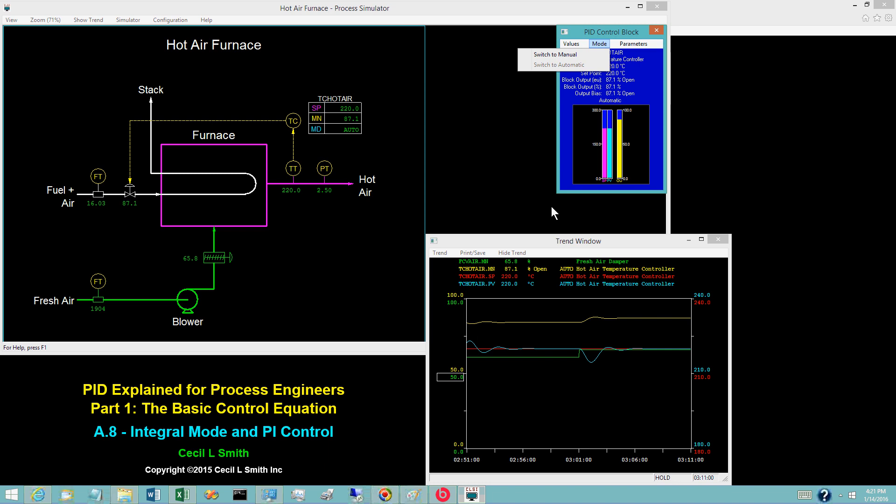A reset time that is too short causes the integral mode to change the controller output bias too rapidly, the result being oscillations in the PV.